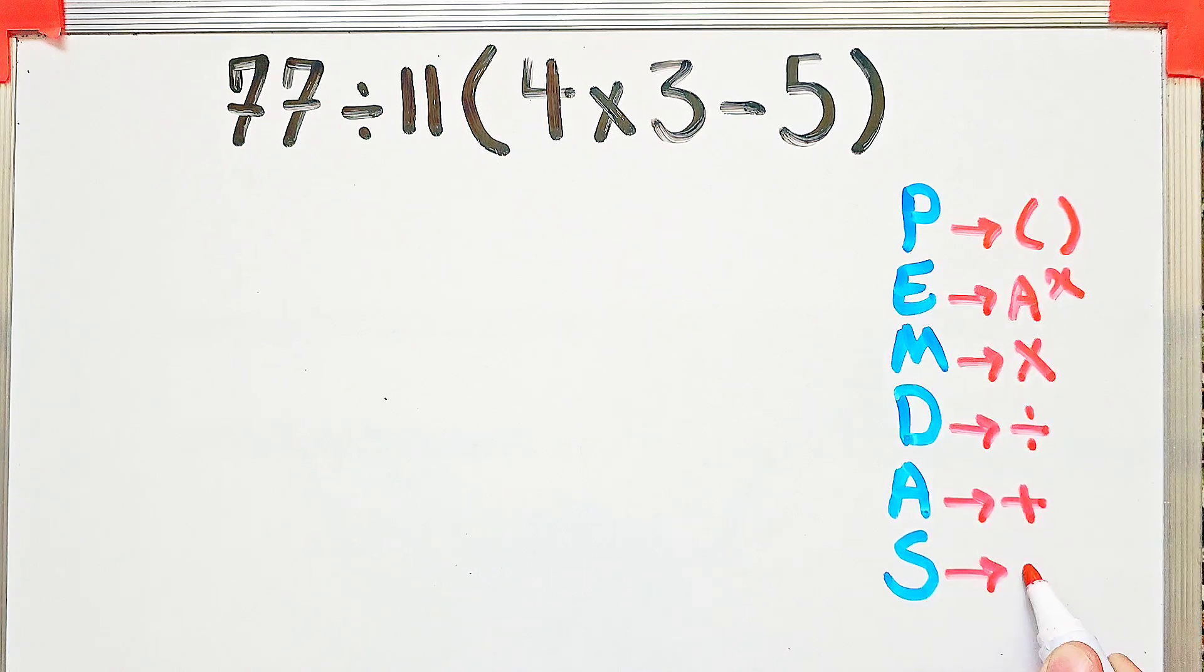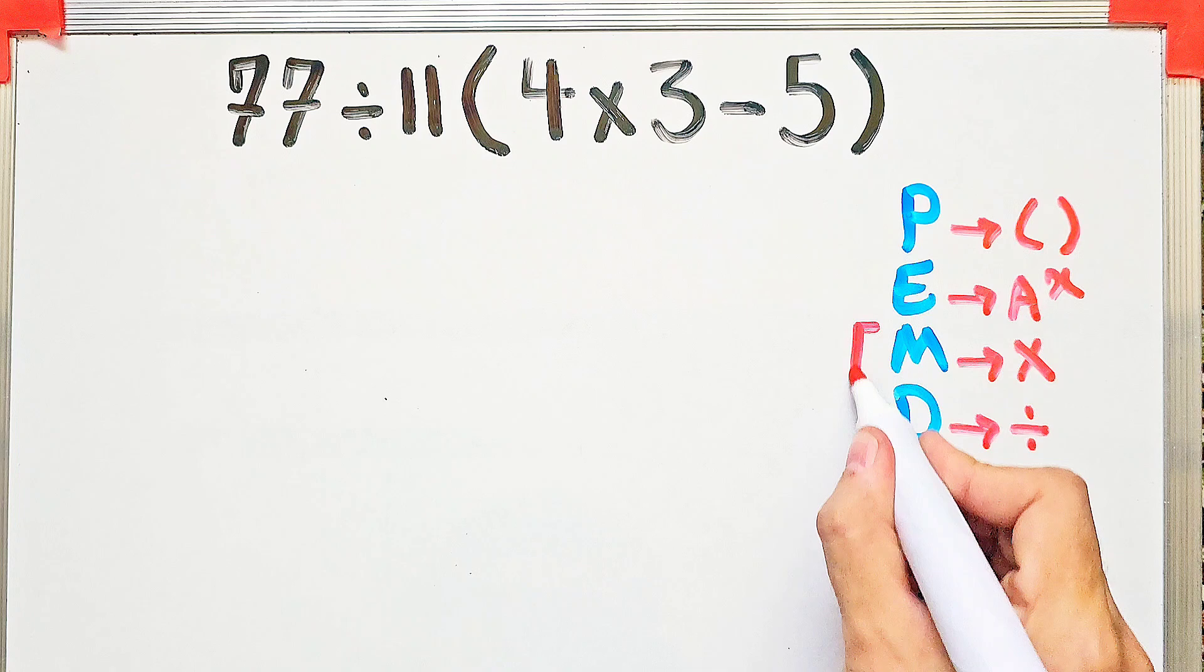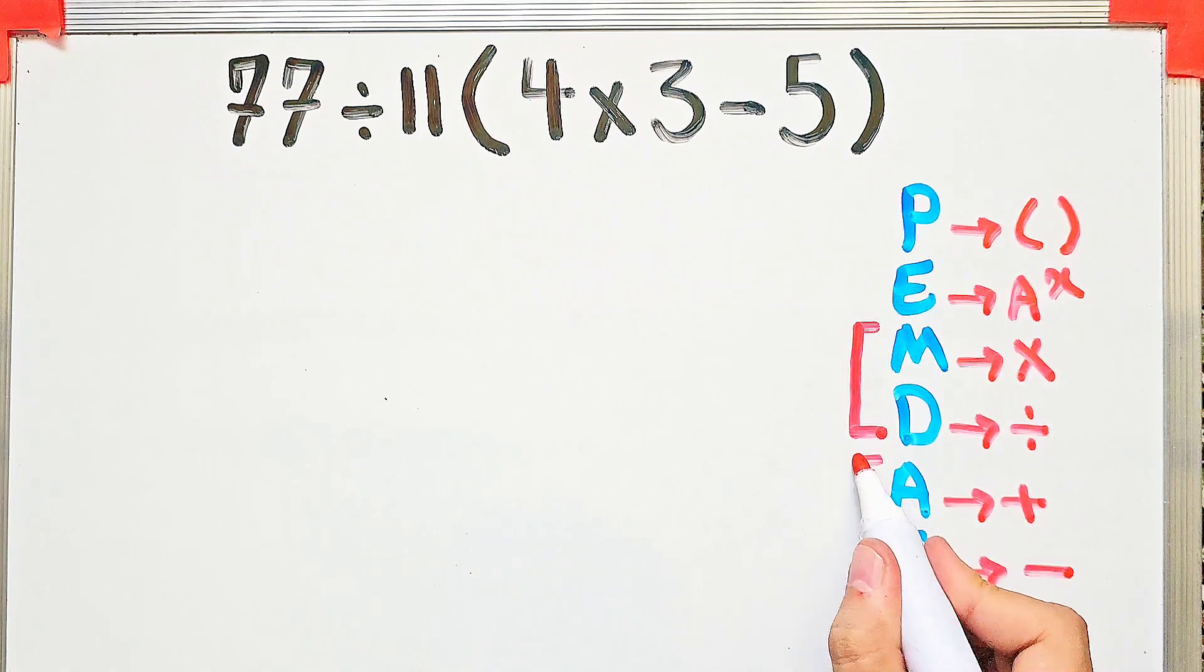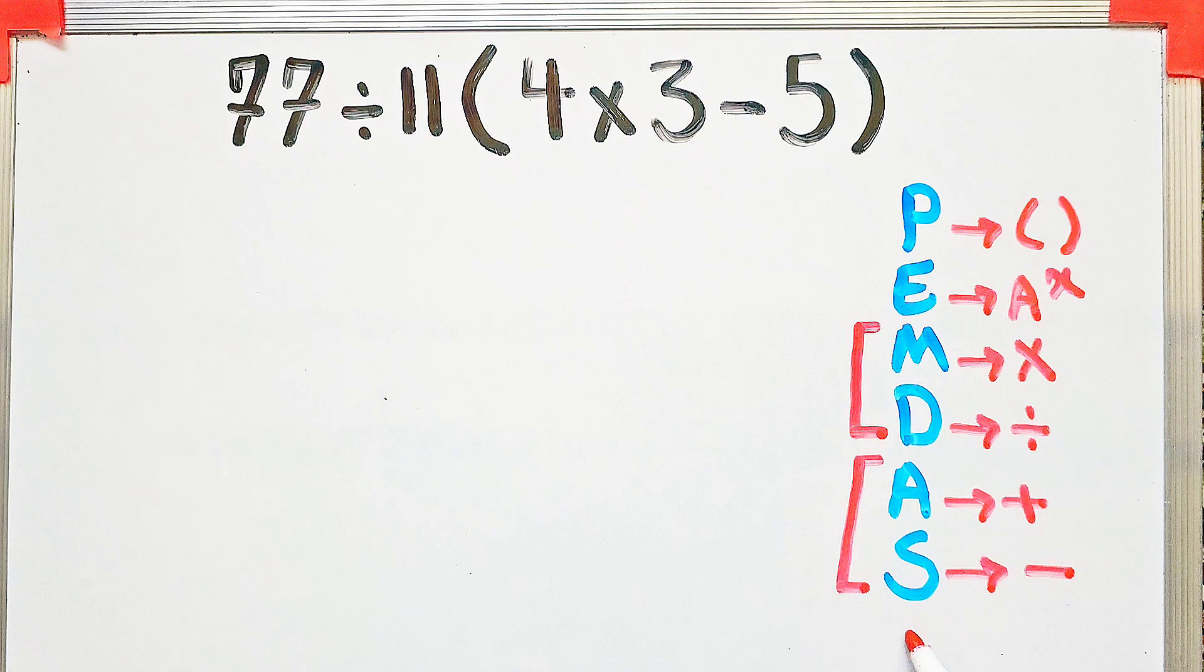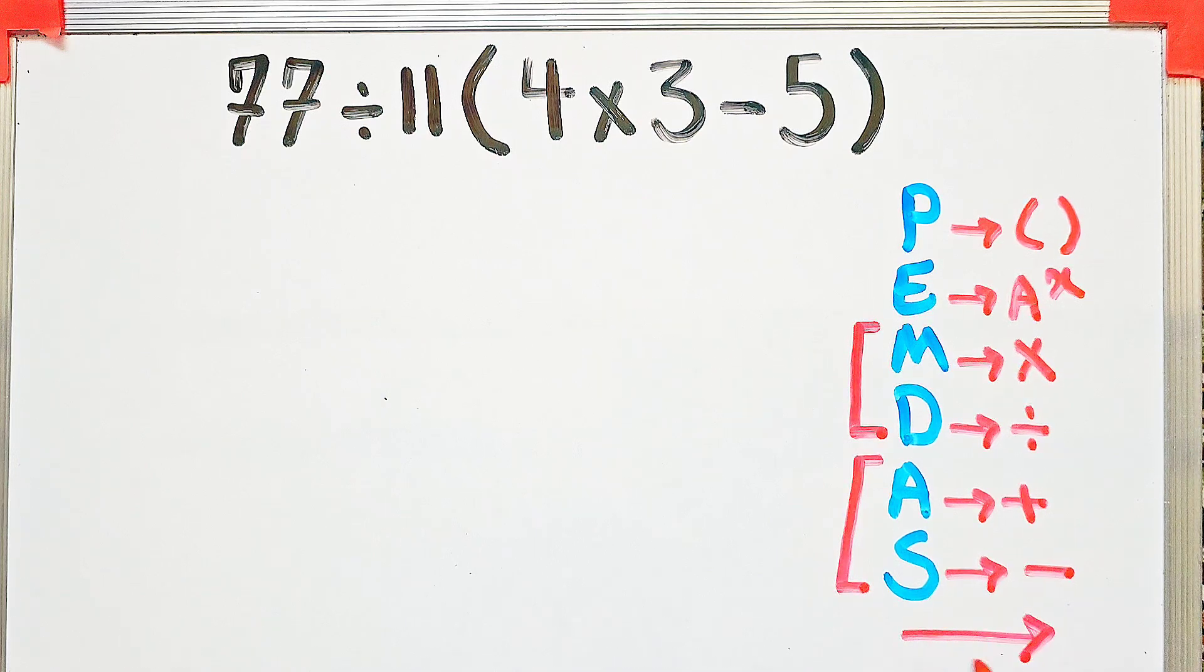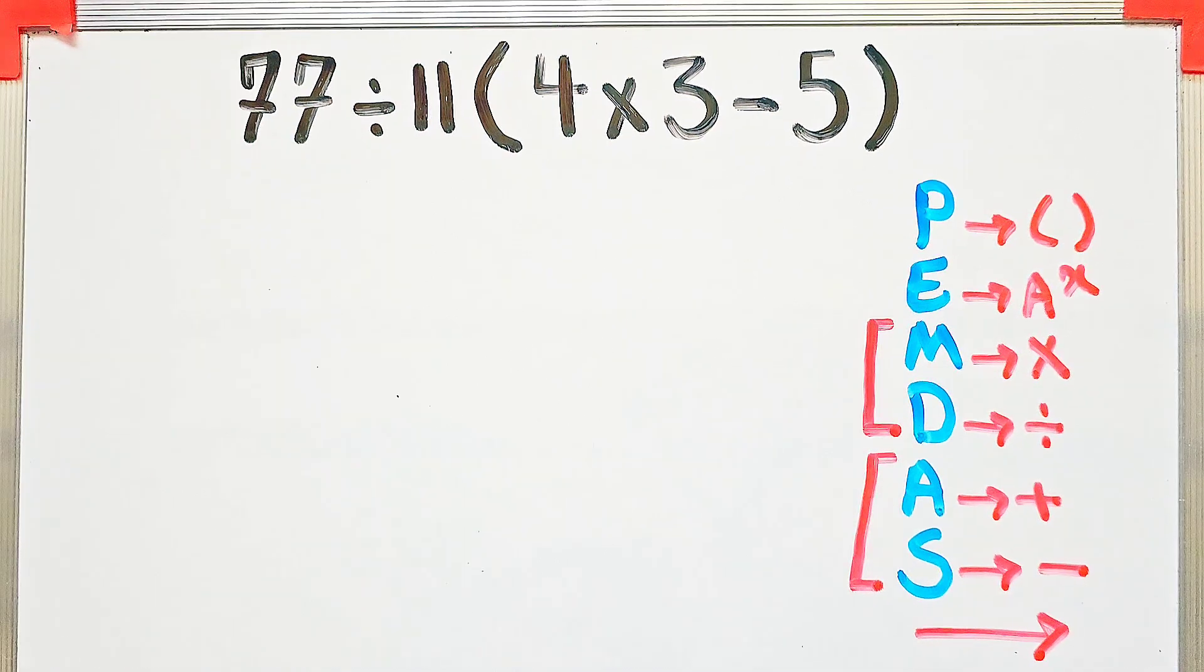Multiplication and division have the same level of priority. Also, addition and subtraction have the same priority. When we have both in an expression, we start from the left and simplify.